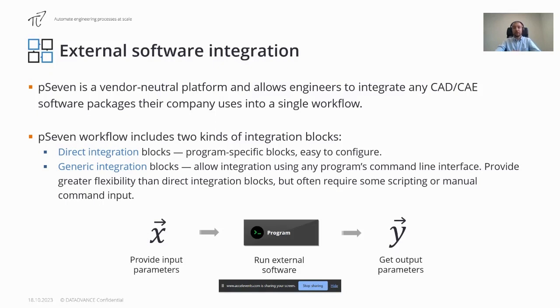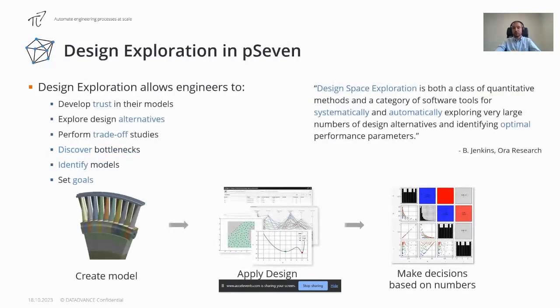Now that we have an automated process, we can start exploring it by re-running with different inputs. This process can be facilitated by design space exploration features. pSeven provides a set of tools and methods for studying a large number of designs and identification of optimal ones. So if you have a parameterized model, then you can explore how it behaves at different parameter values. All design space exploration techniques can be subdivided into two types: either design optimization or design of experiments.